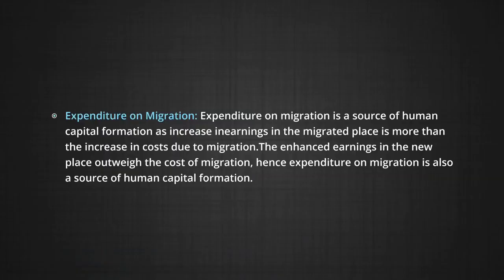Expenditure on migration: people migrate from one place to another in search of jobs that fetch higher salaries. Unemployed people from rural areas migrate to urban areas in search of jobs. Technically qualified persons like engineers and doctors migrate to other countries because of higher salaries available there. Migration involves cost of transportation and higher cost of living in the migrated places. Expenditure on migration is a source of human capital formation as the increase in earnings in the migrated place is more than the increase in cost due to migration. Hence, expenditure on migration and communication is also a source of human capital formation.